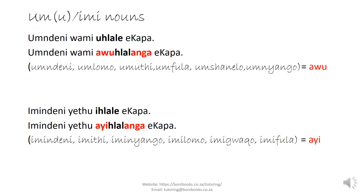Your um-imi nouns: umdeni wame ushala ikapa becomes umdeni awuushalanga ikapa. Imindeni yetu ishala ikapa becomes imindeni aiyi. In the imi group — imindeni, imiti, imilomo, imikwaku, imifula — all those nouns take aiyi.